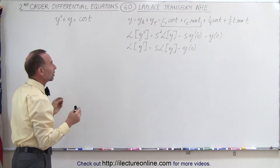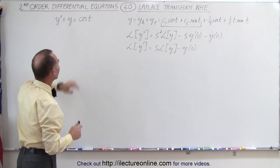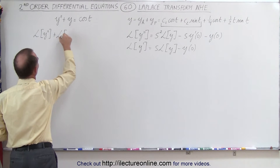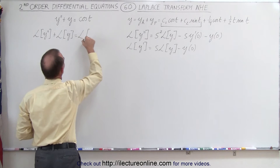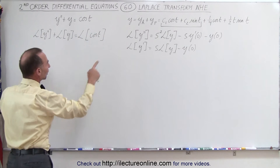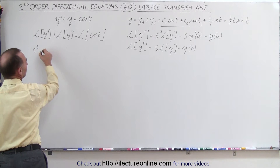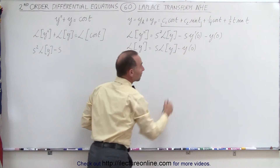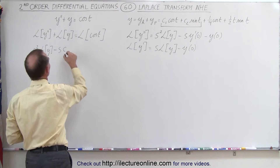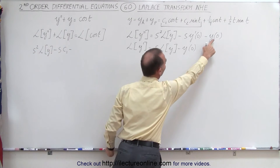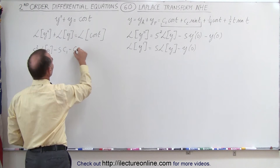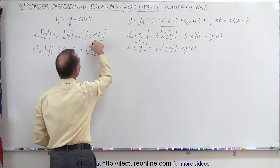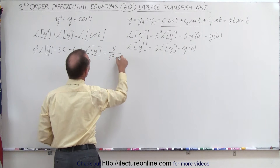When we plug that into the equation, we take the Laplace transform of every term on the left and right side. This becomes the Laplace transform of y double prime plus the Laplace transform of y, which must equal the Laplace transform of cosine of t. Plugging in, we get s squared times L{y} minus s times C1 minus C2 plus L{y} equals s divided by s squared plus one.